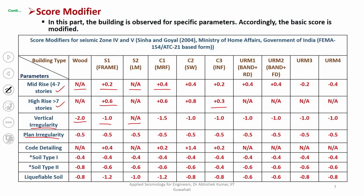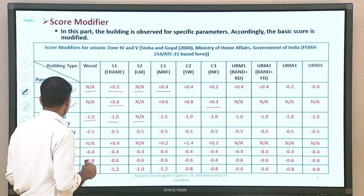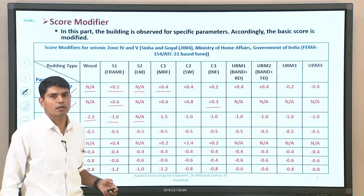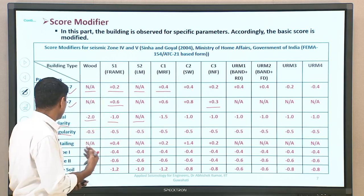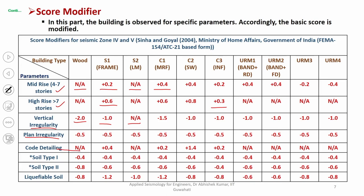For irregularity in plan, which is often not visible from site details unless there is a major in-plan irregularity that can be seen while screening around the building, you can again refer to the score modifier chart and apply the corresponding value. Code detailing — how much detailing given in the code has been followed while designing and constructing the building — also provides a score modifier.